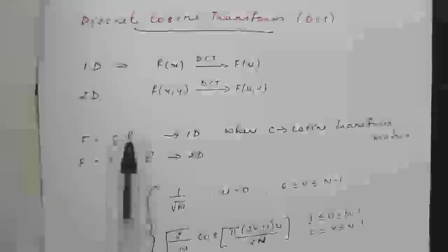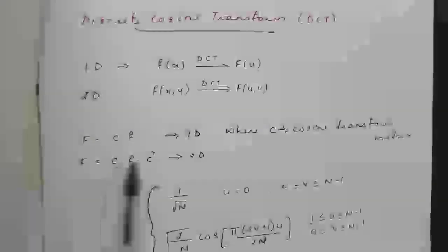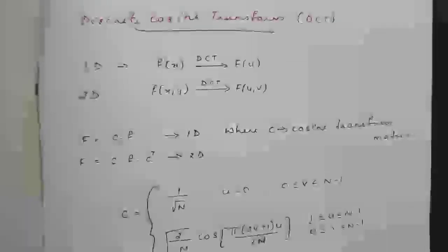These formulas are similar to the Hadamard transform — the pattern C × F × C-transpose. The C matrix is the cosine transform matrix. To form it, the equation is: C = 1/√N for U equal to 0, where V varies from 0 to N−1. And C = √(2/N) × cos(π(2V+1)U / 2N) when U varies from 1 to N−1 and V varies from 0 to N−1.